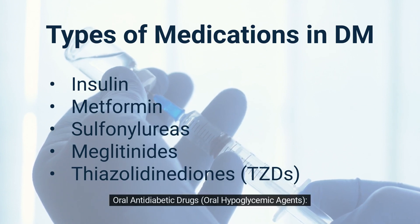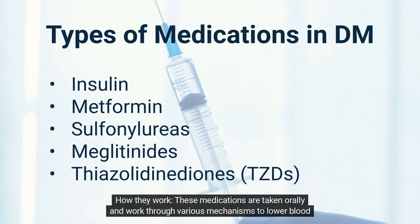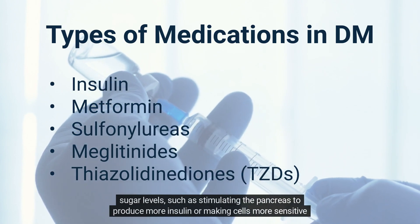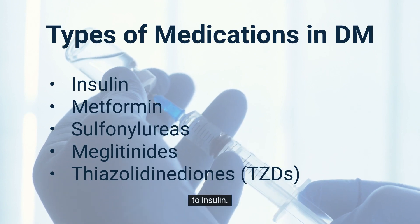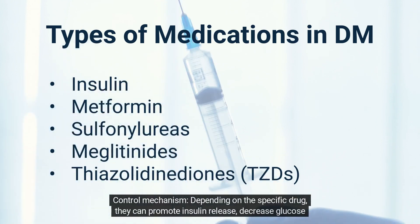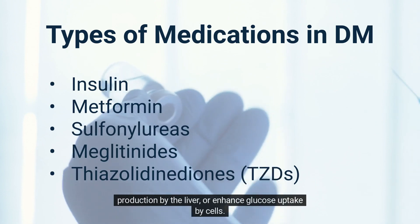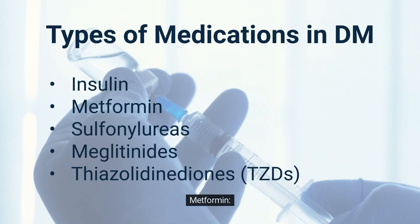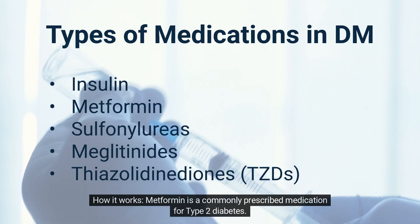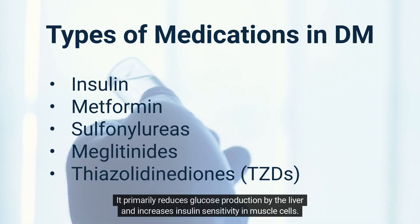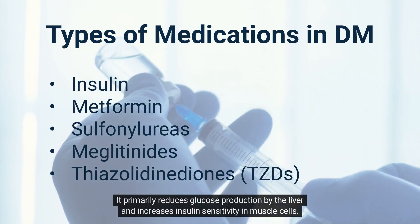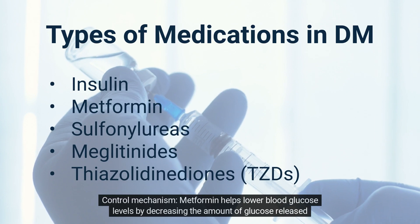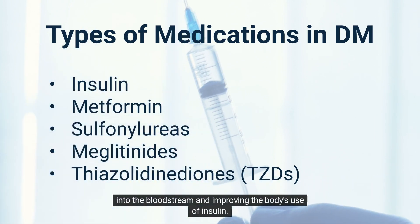Oral antidiabetic drugs (oral hypoglycemic agents) are taken orally and work through various mechanisms to lower blood sugar levels, such as stimulating the pancreas to produce more insulin or making cells more sensitive to insulin. Depending on the specific drug, they can promote insulin release, decrease glucose production by the liver, or enhance glucose uptake by cells. Metformin is a commonly prescribed medication for type 2 diabetes. It primarily reduces glucose production by the liver and increases insulin sensitivity in muscle cells, helping lower blood glucose levels by decreasing glucose released into the bloodstream and improving the body's use of insulin.